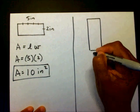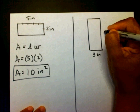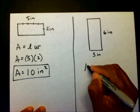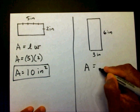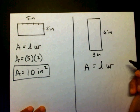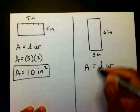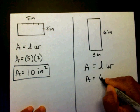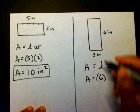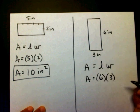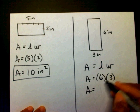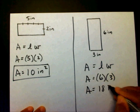This time, this is 3 inches and this is 6 inches. Area equals length times width. My length is going to be the longest side, which is 6, and my width is going to be the shortest side, which is 3. So A equals 6 times 3, which is 18 inches squared.